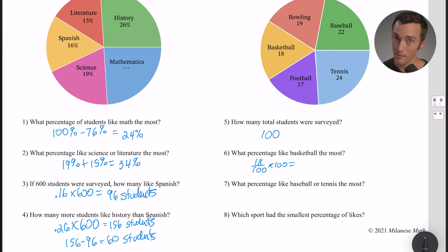How about number seven - what percentage like baseball or tennis the most? If you take the baseball number which was 22 and you add it to tennis which is 24, you're going to get 46. So 46 out of 100 times 100 is going to give you 46%. So 46% of the students are liking baseball or tennis.